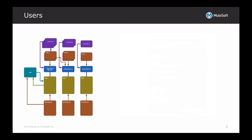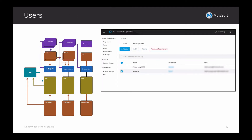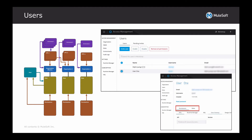Next, of course, is users. When you sign up for an account within the AnyPoint platform, you've already signed in as the organization administrator account, and then you can invite other users to the platform. Each of these users that accepts the invitation — you can assign them different roles and permissions. So when you click on a user's name within Access Management under Users, you can assign them different permissions and different roles based on the function you want them enabled for within the platform — APIs, Runtime Manager, MQ, Data Gateway, Design Center, and so on.